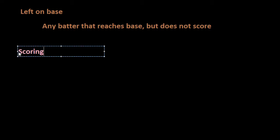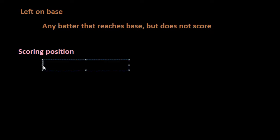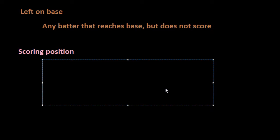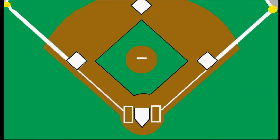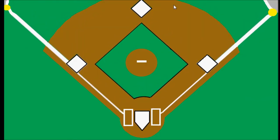Scoring position — you will see it sometimes in the box scores. This is basically any runner on second or third base, and this doesn't necessarily have to be at the end of the inning.